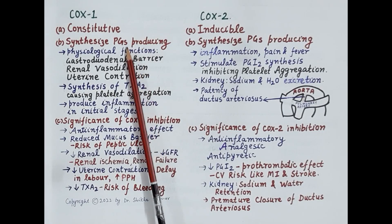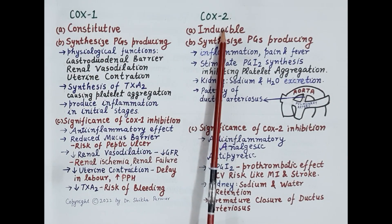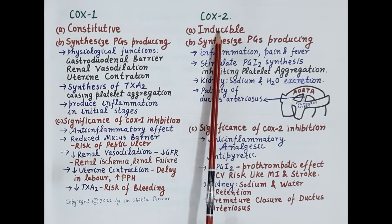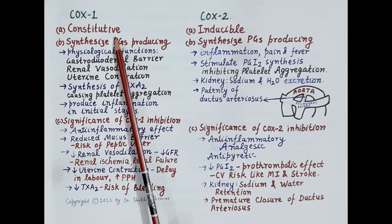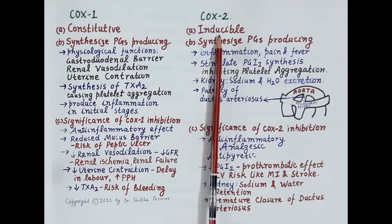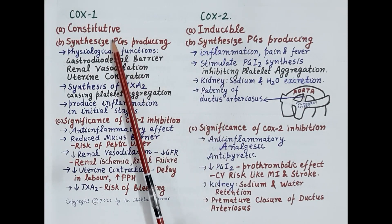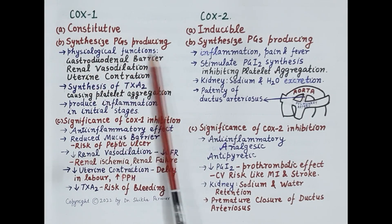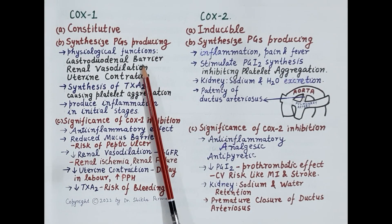Let's summarize what we have learned. COX-1 is a constitutive enzyme — it is a constituent of the cell, present all the time. COX-2 is inducible; it is synthesized primarily during tissue injury, infection, and inflammation.